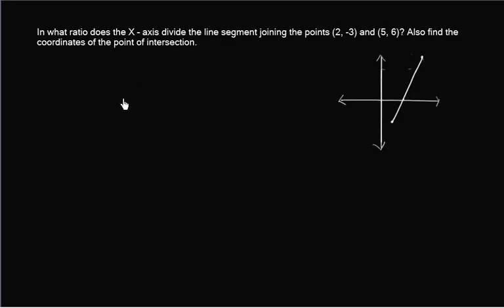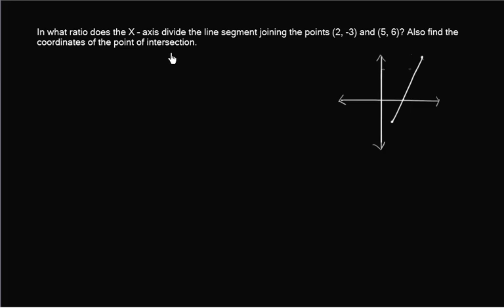Hi everybody, welcome to Agaimath. Today's question: in what ratio does the x-axis divide the line segment joining the points 2 comma minus 3 and 5 comma 6? Also find the coordinates of the point of intersection.